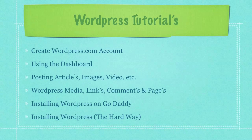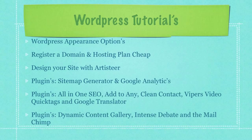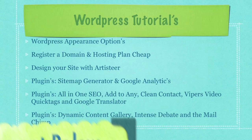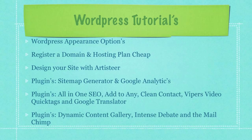Also covered: installing WordPress on GoDaddy, a way to install WordPress on pretty much any other hosting site, how to use the WordPress appearance options, how to register a domain and hosting plan cheap. Then I show you how to design your site with an extremely inexpensive tool called Artister. Then I go into a bunch of plugins: the sitemap generator and Google Analytics. In the next video, I cover All in One SEO, Add to Any Clean Contact, Vipers Video Quick Tags, and Google Translator.